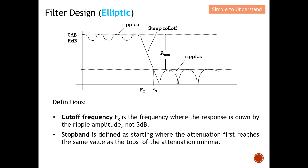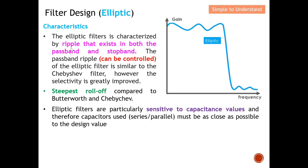You actually determine how much roll-off factor you want and therefore need to tolerate more ripple — this is the Elliptic method. The Elliptic filter is categorized by ripple that exists in both the pass band and stop band. The pass band ripple can be controlled similarly to the Chebyshev filter. For Elliptic, you can control the ripple at both the pass band and stop band, and because of this they most of the time have a steeper roll-off factor compared to the rest of the group.